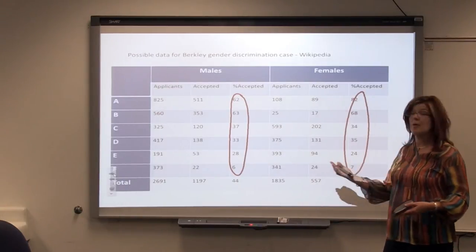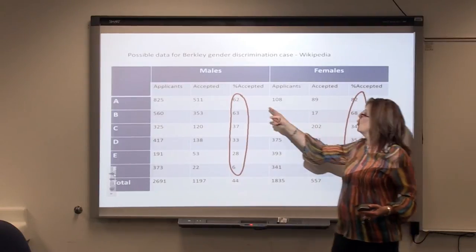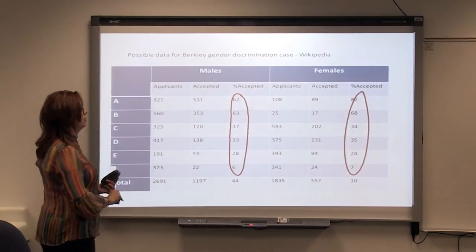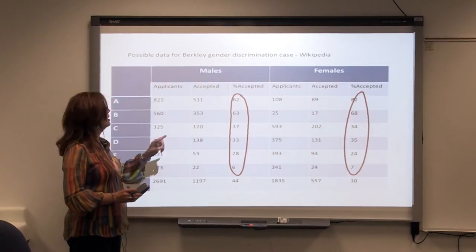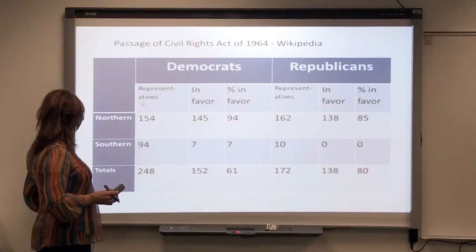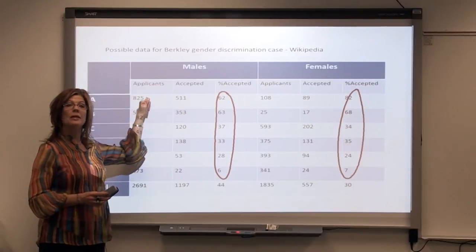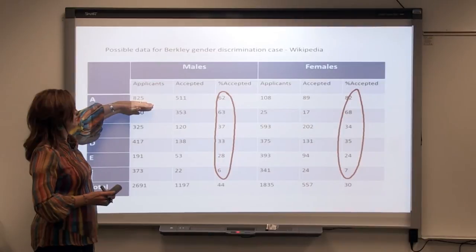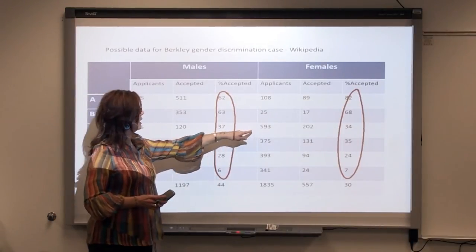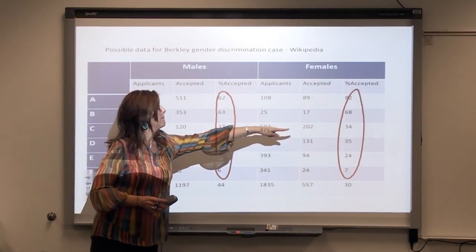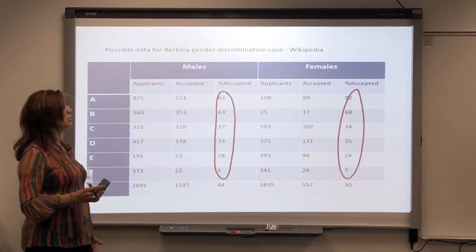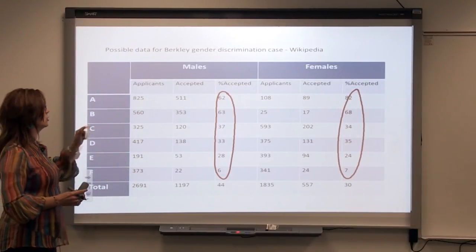The male population might have countersued and said, look, you only accepted 62% of males where you accepted 82% of the female population. It has to do with how this is weighted — you may have heard of weighted averages before. That's what Simpson's Paradox is about. Where are the heavy denominators? The females had many applicants at College C — that's where their heavy population was. But College C only allowed in 34% of females, where they let in 37% of males. So if we look at the different college breakdowns, we get a different picture.